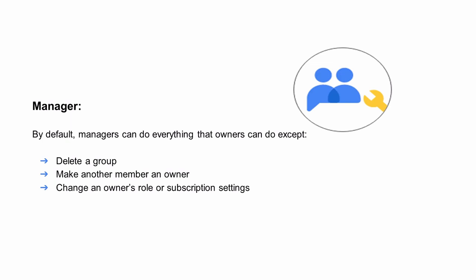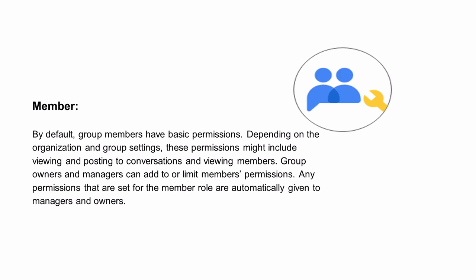Group owners can set any permission to owner only, further limiting what managers can do. However, managers always have the ability to adjust permissions to include managers. A group can't be a manager of another group. By default, group members have basic permissions. Depending on the organization and group settings, these permissions might include viewing and posting to conversations and viewing members. Group owners and managers can add to or limit members' permissions. Any permissions set for the member role are automatically given to managers and owners.